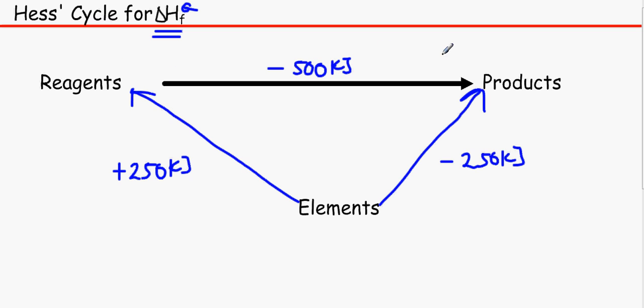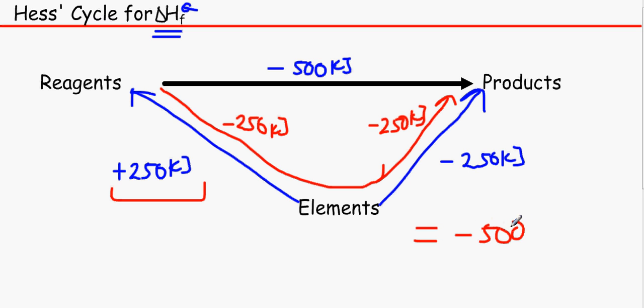Seeing as we can't take the first route from reagents to products, we can go through this route like this. We can take a little detour. Now we can take the numbers from each one of these, but seeing as the energy that was needed to go from elements to reagents was a positive, for it to go from reagents to elements would be a negative, and that would be minus 250 kilojoules of energy. Over here, seeing as we're going the right direction anyway, it'll be minus 250 kilojoules of energy as well.